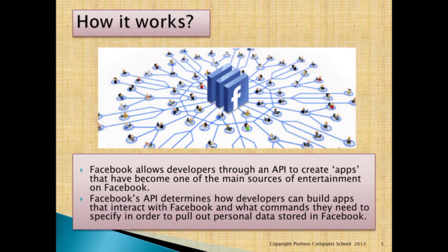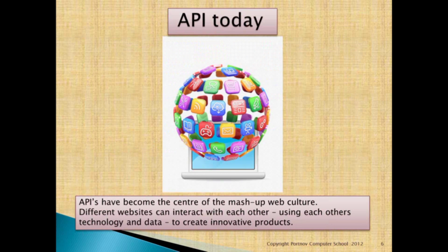Facebook's API determines how developers can build apps that interact with Facebook and what commands they need to specify in order to pull out personal data stored in Facebook. APIs have become the center of mashup web culture, where different websites can interact with each other using each other's technology and data to create innovative products.